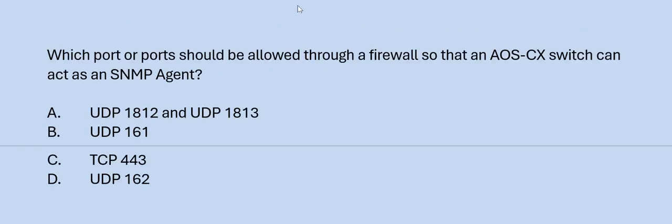Next question: Which port or ports should be allowed through the firewall so that an AOS-CX switch can act as an SNMP agent? Option A: UDP 1812 and UDP 1813. Option B: UDP 161. Option C: TCP 443. Option D: UDP 162. The correct answer is Option B.